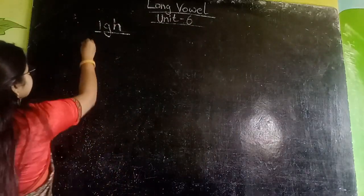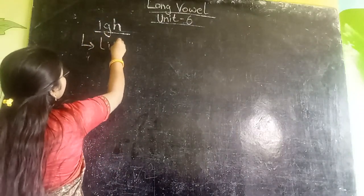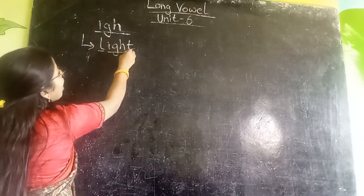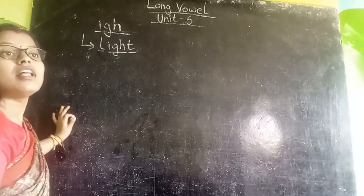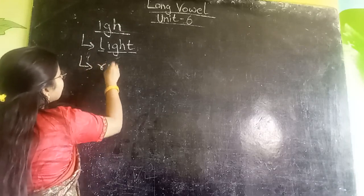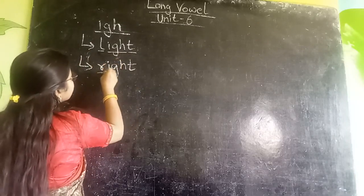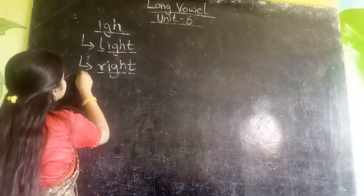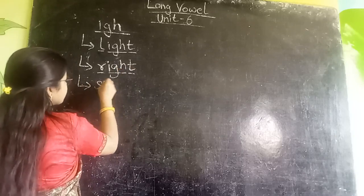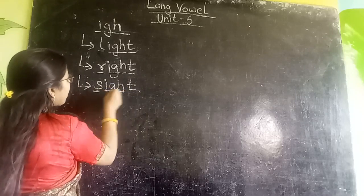So let's take an example. L, I, G, H, T — light. Another one: R, I, G, H, T — right. S, I, G, H, T — sight.